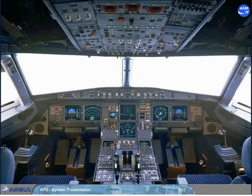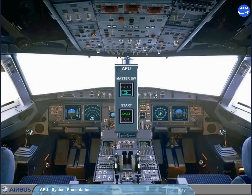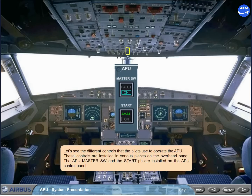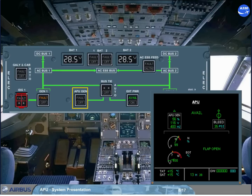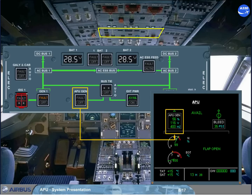Let's see the different controls that the pilots use to operate the APU. These controls are installed in various places on the overhead panel. The APU master switch and the start push button are installed on the APU control panel. The APU GEN push button switch is located on the electrical panel and is used to control the APU generator.